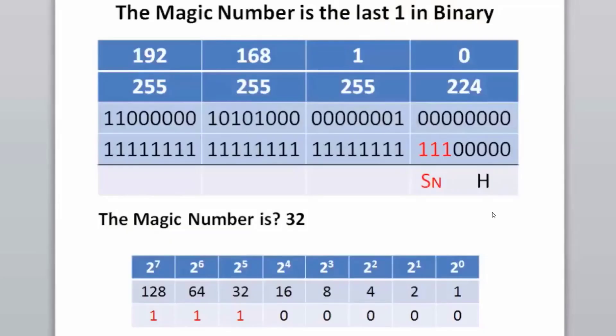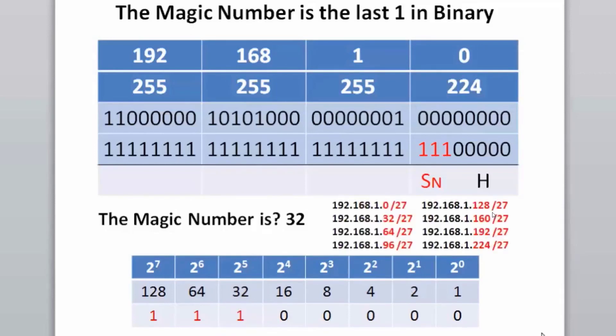In classless subnetting, we've seen how we can borrow bits from the host portion of the subnet mask. The last one that's borrowed is the magic number, meaning that the last one, if we look at the place value of the 8-bit grouping, the last one in this case is in the 32s place, so the networks go up by 32 starting with the zero network. We have the 32 network, then the 64, 96, 128, and so on and so forth.